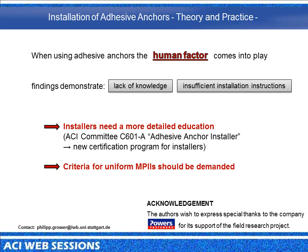The findings of the field research project clearly demonstrate two key points. First, there is a lack of knowledge — many installers do not know how these systems work or what the influencing parameters are. They do not want to do a bad job, but they do not have the knowledge to install the anchors correctly. Second, many products have installation instructions that are not sufficiently detailed or are too complicated. Installers urgently need more detailed education. ACI Committee C601-A on adhesive anchor installers is working on a new certification program for installers, which is absolutely a step in the correct direction. We also need clear and unmistakable installation instructions — criteria for uniform manufacturer's product installation instructions should be demanded. Thank you very much for your attention.